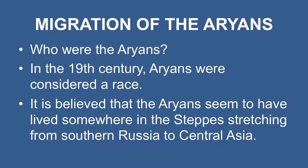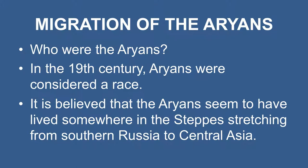We will now discuss the migration of the Aryans. The authors of the Vedic hymns were the Aryans. In the 19th century, Aryans were considered a race. Now, it is thought of as a linguistic group of people who spoke Indo-European language from which later emerged Sanskrit, Latin, and Greek. It is believed that the Aryans seem to have lived somewhere in the steppes stretching from South Asia to Central Asia. Apparently, a group of them migrated to North-West India and came to be called Indo-Aryans, or just Aryans.